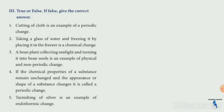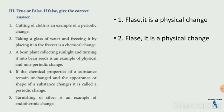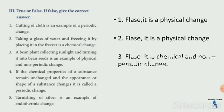True or False. Cutting of clothes is an example of periodical changes — it is a non-periodical change, so that is false. Taking a glass of water and freezing it by placing in a freezer — this is a physical change; freezing is a physical change. A bean plant collecting sunlight and turning it into a bean seed — this is a photosynthesis process, an example of chemical and non-periodical changes.